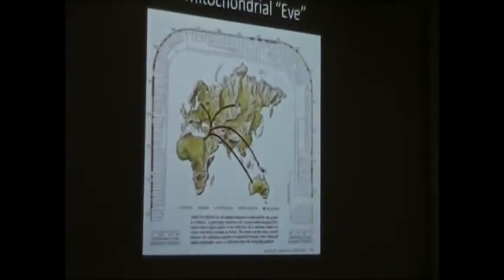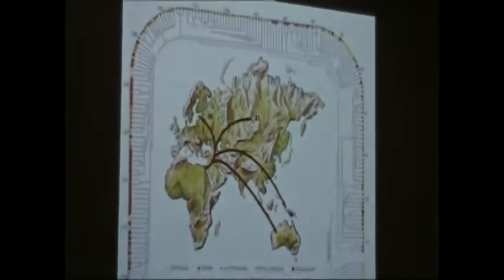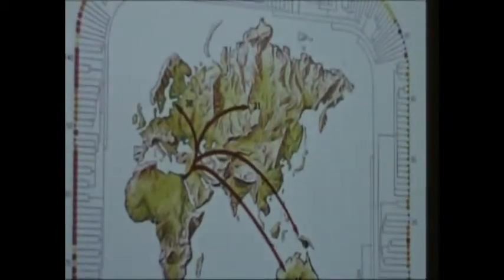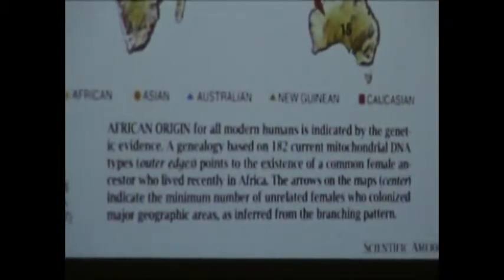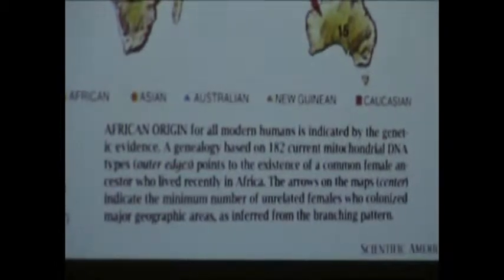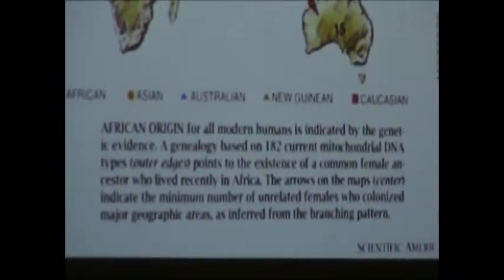Creating a family tree, in a sense, of all of these mitochondrial DNA lineages, what Alan Wilson and his students, Becky Kahn and Mark Stoneking, found was that the most ancient lineages in this family tree could be traced back to lineages in Africa. And this therefore identified Africa as the homeland, not only of the fossil hominids that we knew from the archaeological record, but the origin of all modern humans.